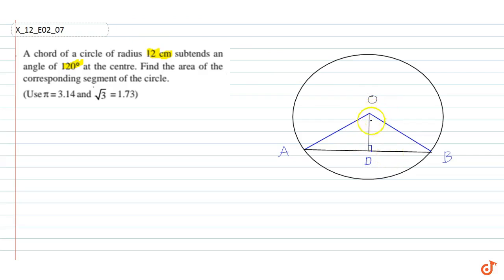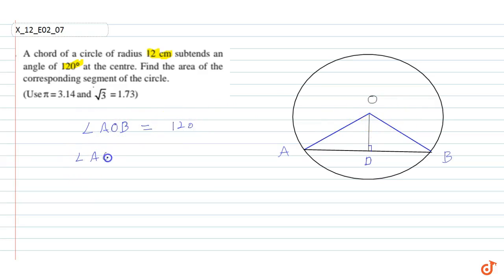Now, we have already been given that angle AOB is 120 degrees. If this angle is bisected, then angle AOD is half of 120 degrees — that is, 120 divided by 2, which is equal to 60 degrees. So this angle AOD is 60 degrees.